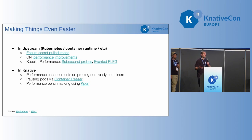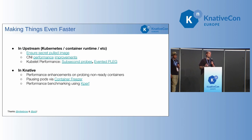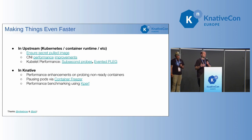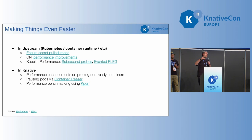In terms of kubelet performance, one thing we do in Knative is run probes to make sure things are up. Probes run at a one-second interval, so if the container isn't ready when the probe hits the first time, you have to wait another second. We have a KEP out to run probes on a sub-second interval so we can respond even faster. We presented at SIG node two weeks ago, and the Red Hat folks — Derek and others — mentioned they were working on a similar KEP on the evented plugin, which will use kubelet based on events instead of polling, which should also speed things up.